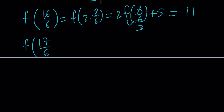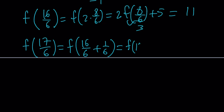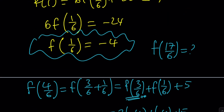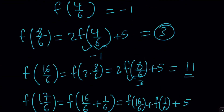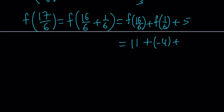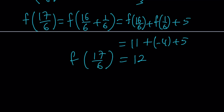We write 17 over 6 as 16 over 6 plus 1 over 6 — never simplify these fractions because you always want to keep a 6 at the bottom. By the formula, f of 17 over 6 equals f of 16 over 6 plus f of 1 over 6 plus 5. We know f of 16 over 6 is 11 and f of 1 over 6 is negative 4. So 11 plus negative 4 plus 5 equals 12. Therefore f of 17 over 6 equals 12.